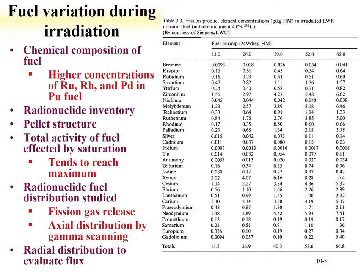The chemical composition of the fuel has an influence — for instance, ruthenium, rhodium, and palladium have higher concentrations in plutonium-based fuel. There is also a trend where the total activity of fuel is affected by radioactive saturation, where you get an equilibrium between growth and decay and a maximum activity is reached. The radionuclides produced are distributed within the fuel and are not always homogeneously distributed.